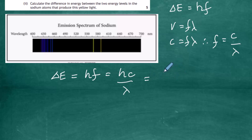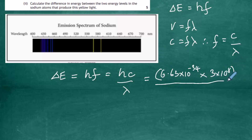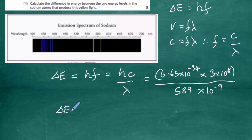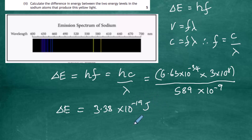Planck's constant is 6.63 × 10⁻³⁴, multiplied by the speed of light 3 × 10⁸, divided by the wavelength of 589 nanometers, which we convert to 589 × 10⁻⁹ meters. This gives ΔE = 3.38 × 10⁻¹⁹ joules, which to two significant figures is 3.4 × 10⁻¹⁹ joules. So the energy gap is 3.4 × 10⁻¹⁹ J.